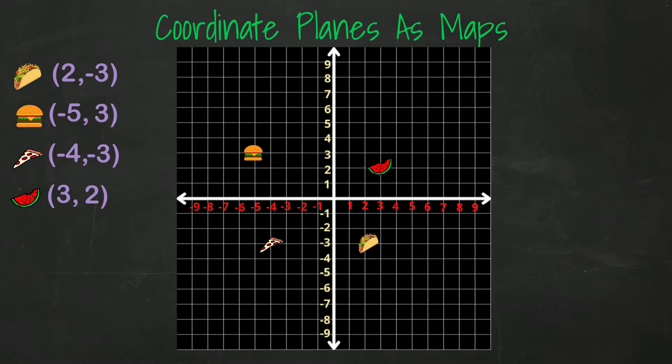That was a basic example of how to use the coordinate plane as a map. When you think about it, longitude and latitude information is the same thing as coordinates on a coordinate plane. They are the x-axis and y-axis points that you can use to find any place in the world.